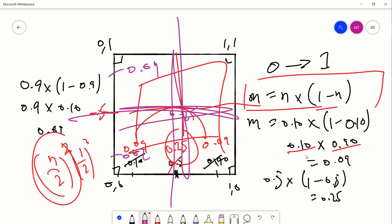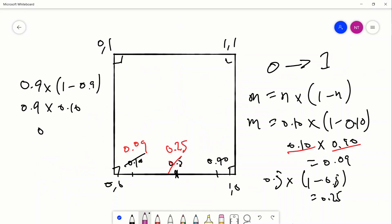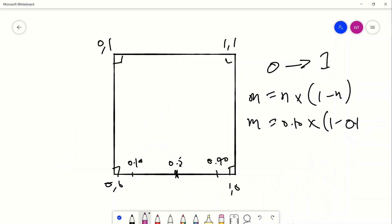All right, so why 0.25. Well, I'll clear this clutter.